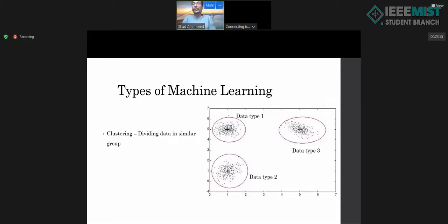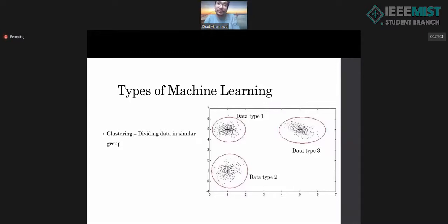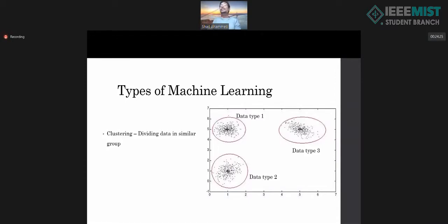Now, types of machine learning. Clustering is a type where, suppose you have data placed on an x-axis and y-axis, and you find there are three clusters you can form. As you can see in the slide, there is data type one, data type two, and data type three. Whenever you get new data, you check whether it falls under the category of data type one, two, or three — that is how clustering predicts an outcome.